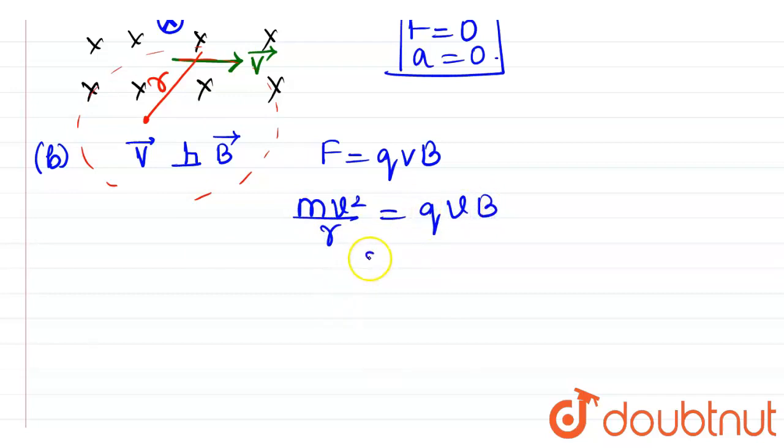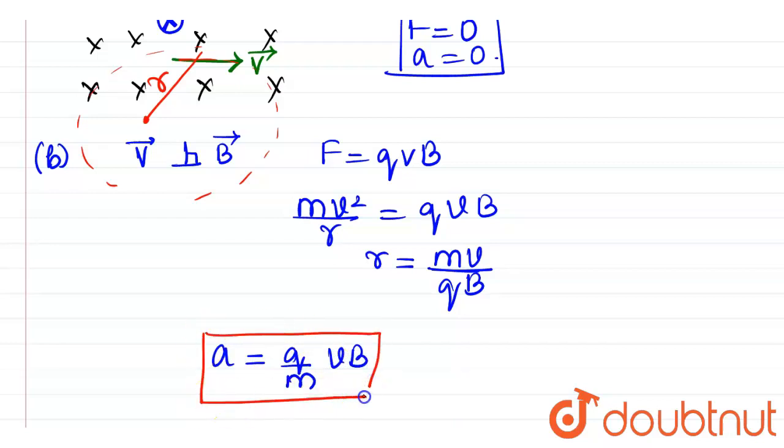Eliminating V and rewriting an expression for R, this will be nothing but R is equal to M V divided by Q B. Now, if at all I am trying to find out acceleration of the electron in this case, acceleration is force by mass, so it will be Q by M times V B. So in the second case, I can see that there is some acceleration generated in the electron.